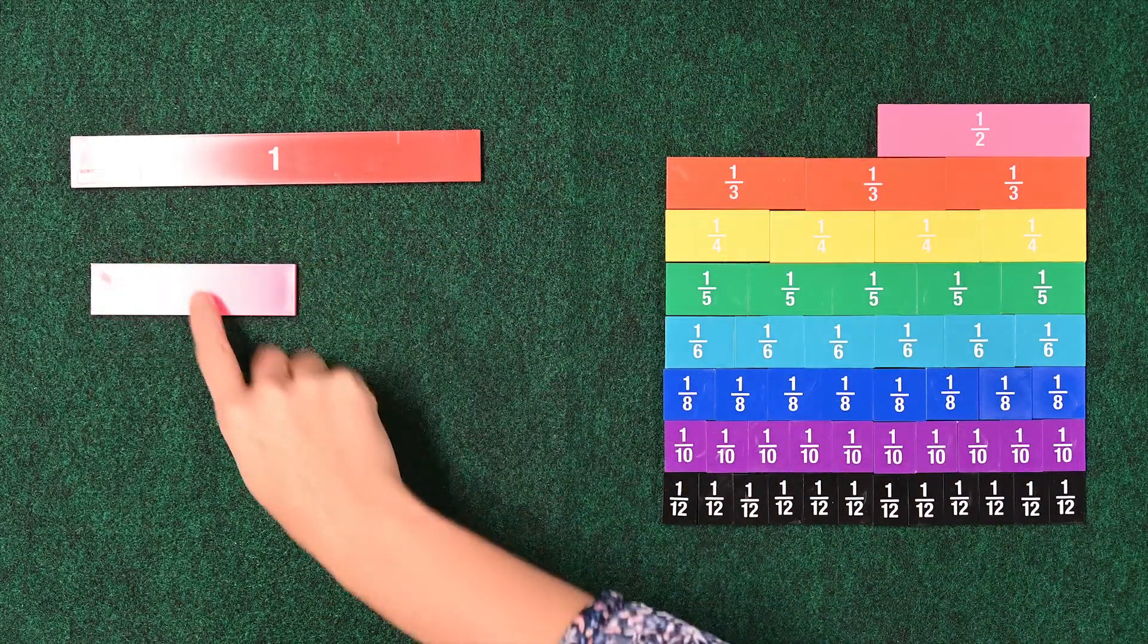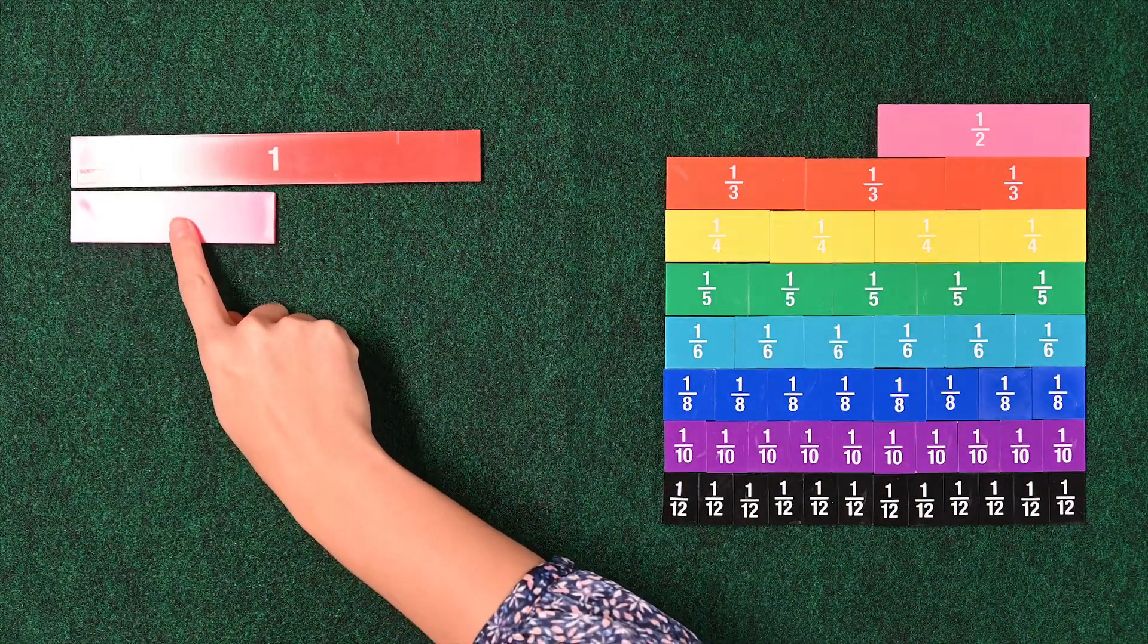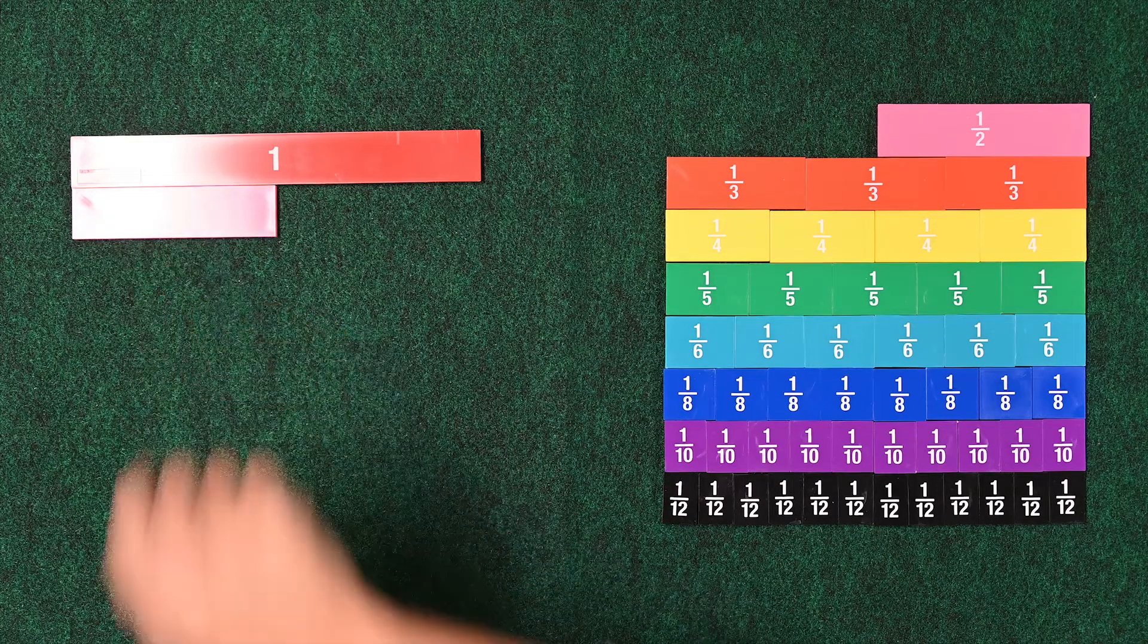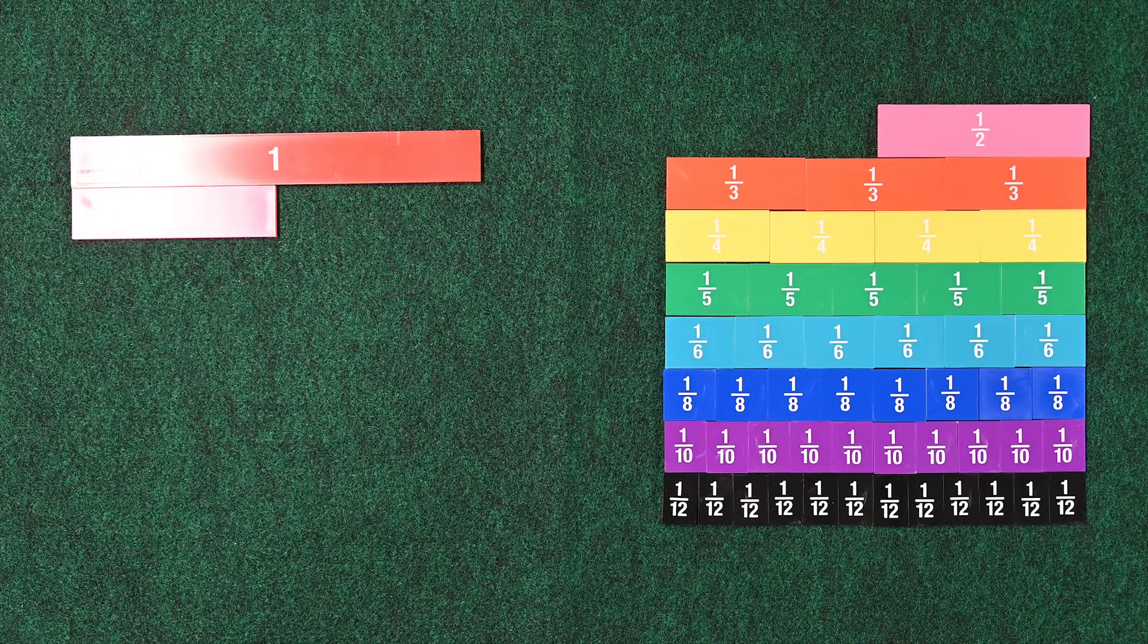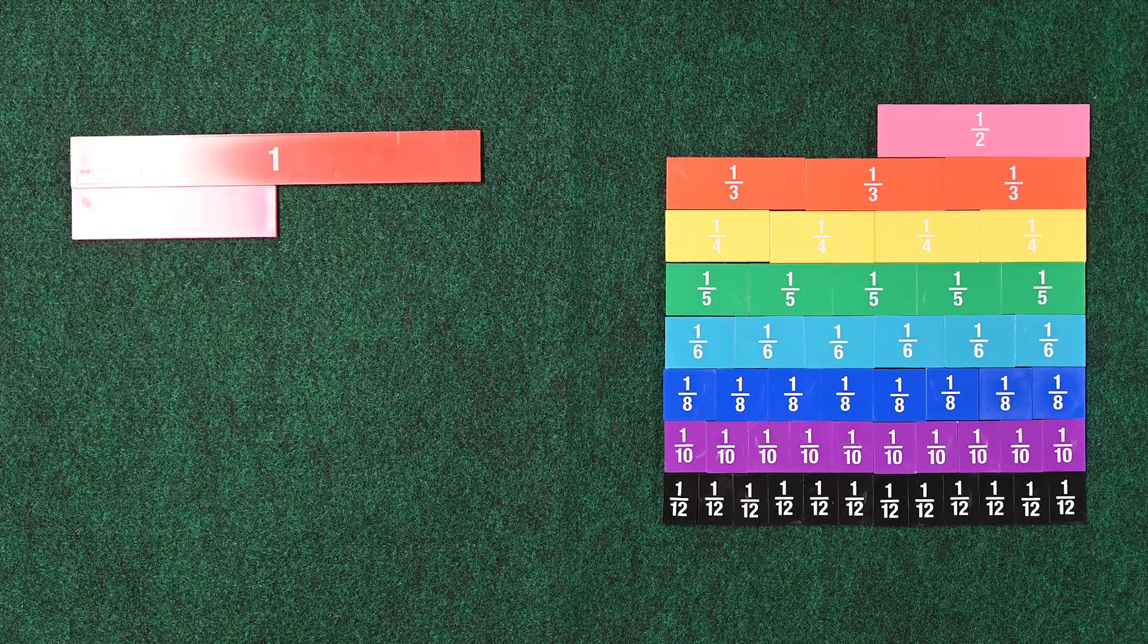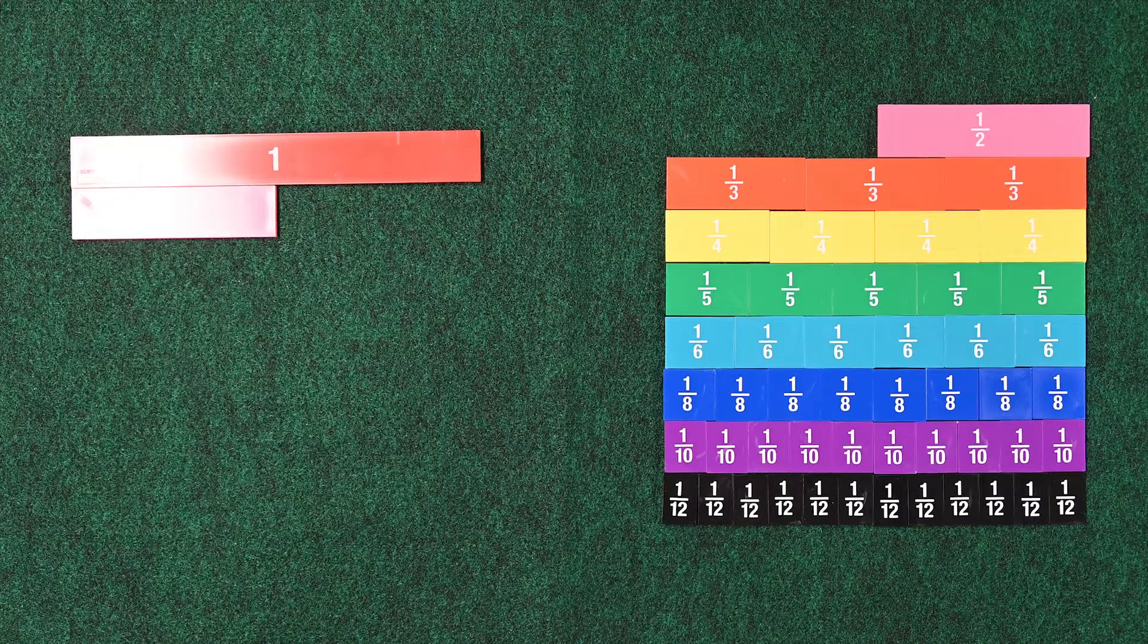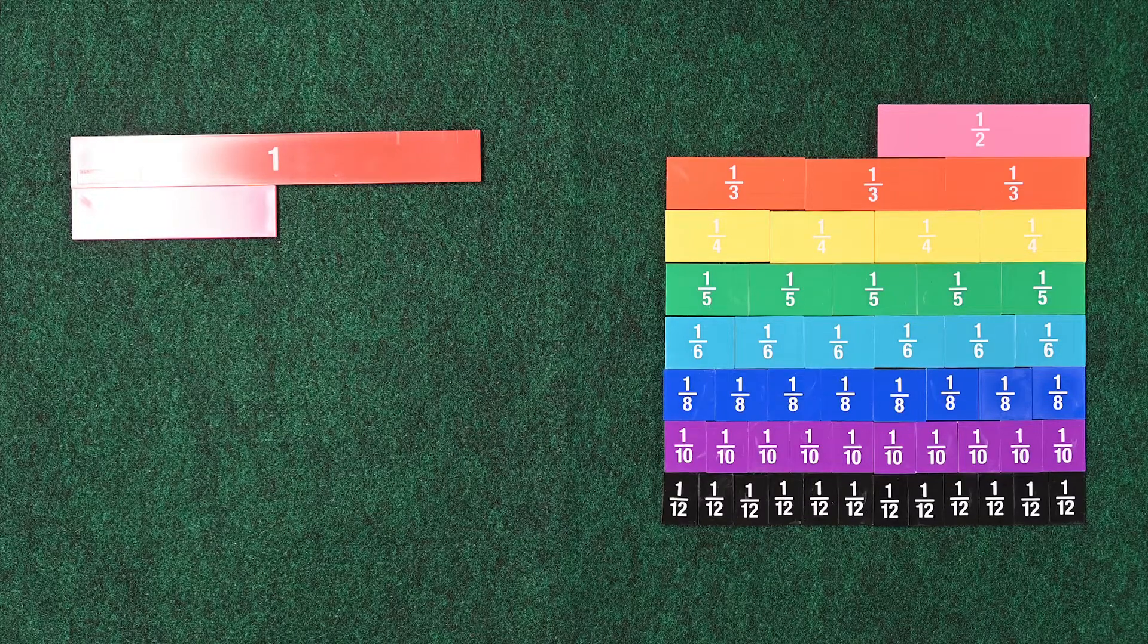And we're going to build 1 from using these fractions. So let's take a 1 half and put it next to the 1. And the question to you is, how can you make 1 without using another 1 half?